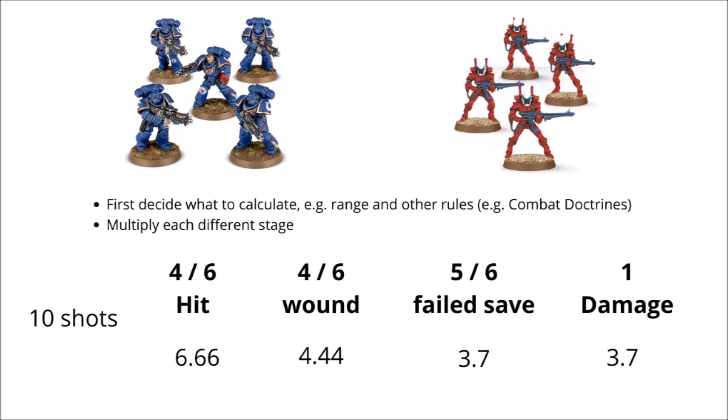After AP from the bolt rifles, the Guardians will only save on a six, which means five of the dice rolls are going to be successful — basically anything but a six. So I'd multiply by five divided by six, giving you an average of 3.7 wounds on the Eldar Guardians. If damage matters, I'd do that at the end — say if you were firing an overcharged plasma gun against a multi-wound vehicle, I'd multiply the number of failed saves by two, as it has a damage characteristic of two. In terms of expected damage output, if our Intercessor squad is firing at a large squad of Eldar Guardians, we can expect to kill around three or four of them on average, though any one dice roll could be higher or lower.